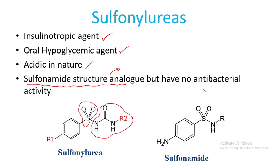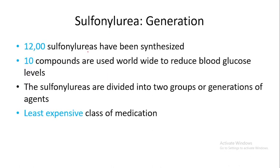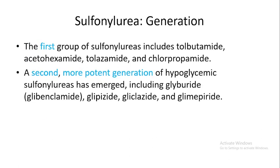Sulfonyl ureas were originally discovered for their antibacterial properties. More than 1,200 sulfonyl urea drugs have been synthesized, but only 10 compounds are used worldwide to reduce blood glucose levels. These sulfonyl ureas are divided into two groups or generations: first generation and second generation. The second generation is 100 times more potent than the first generation anti-diabetic agents, and sulfonyl ureas are the least expensive class of medication.